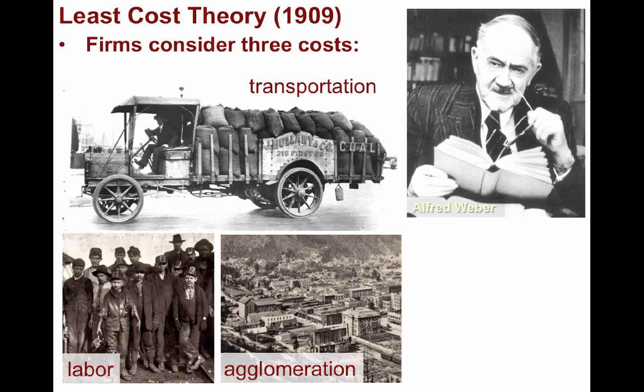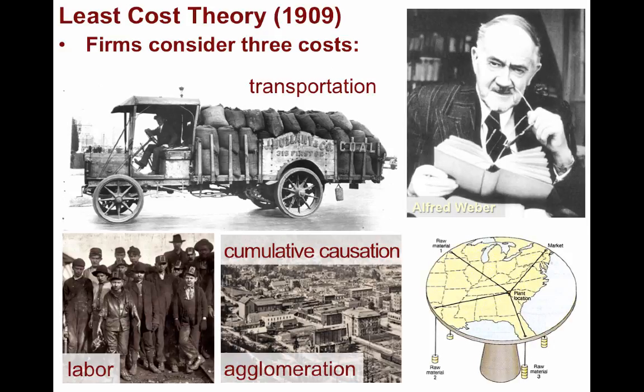A third consideration was to maximize agglomeration economies. By clustering people and businesses near each other, an environment of cumulative causation is established, in which more investment attracts more business. According to Weber, once you take into consideration the location of raw materials, the location of the closest market, and the different transportation costs, a specific point would indicate the lowest cost of production and would therefore be the ideal location for the factory.